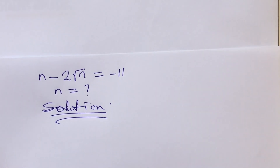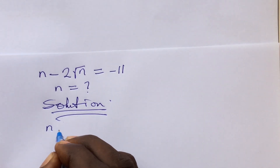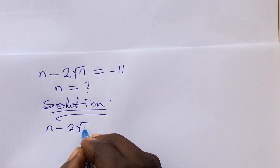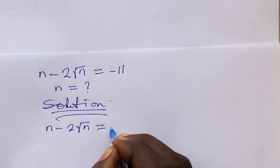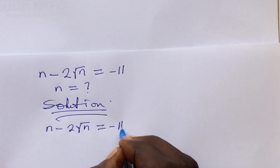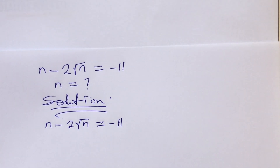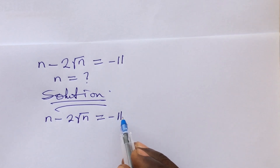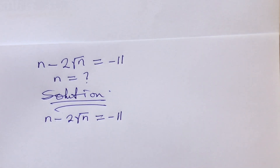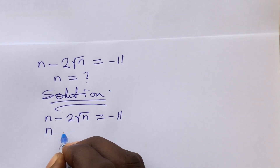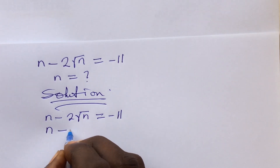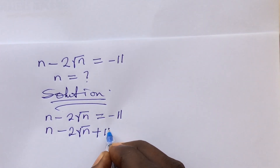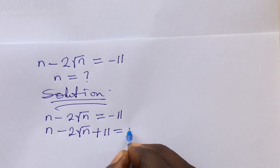We put down the question: n minus 2 root n equals minus 11. The first thing we do is move the minus 11 from the right-hand side to the left-hand side, giving us n minus 2 root n plus 11 equals zero, because when minus crosses the equality sign it becomes positive.